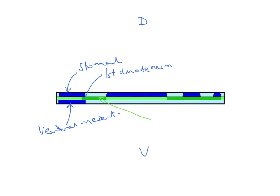In the region illustrated here, there is no ventral mesentery and no dorsal mesentery. That represents where the duodenum is — specifically the second, third, and fourth parts of the duodenum, which sit retroperitoneally. Therefore there is no mesentery to attach them as intraperitoneal structures.